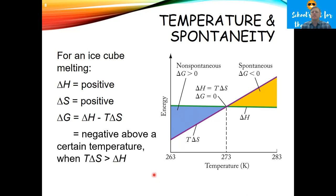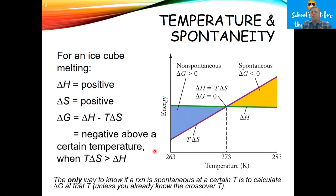This means that the only way to know if a reaction is spontaneous at a certain temperature, especially for unfamiliar reactions, is to calculate delta G at that temperature. Of course, if you know the crossover temperature — like what temperature water boils at — you already know whether a process is spontaneous at a given temperature.